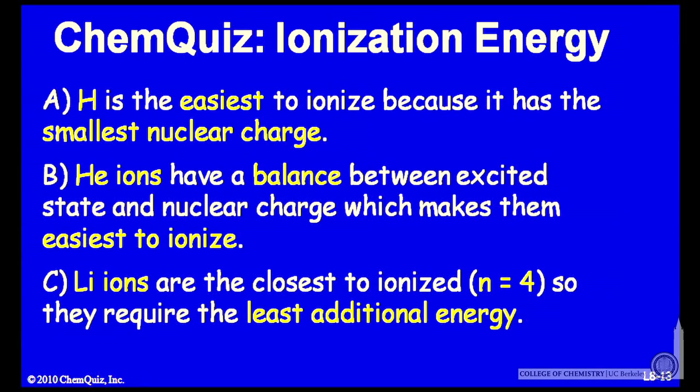Let's look at possible arguments for each of the answers. A hydrogen is the easiest to ionize because it has the smallest nuclear charge. B helium ions have a balance between excited state and nuclear charge, which makes them easiest to ionize. Or C the lithium ions are the closest to ionized in the n equals 4 state, so they require the least additional energy. Think about those three arguments and make another selection.